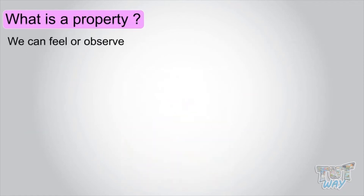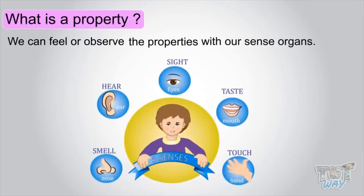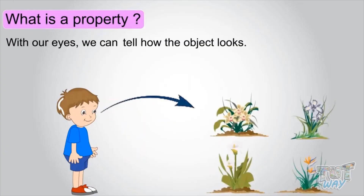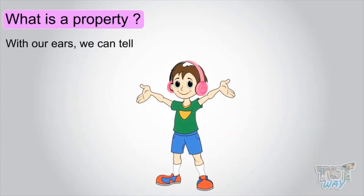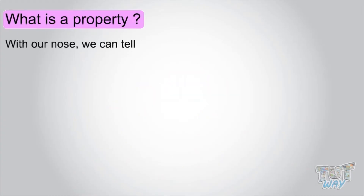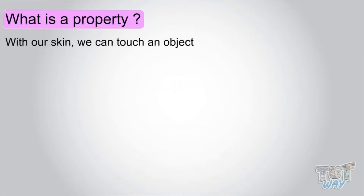We can feel or observe the properties with our sense organs. With our eyes, we can tell how the object looks. With our ears, we can tell how the object or material sounds. With our nose, we can tell how an object smells. With our skin, we can touch an object to know how it feels.